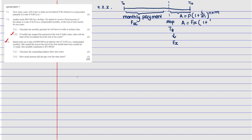So the combined formula is: A equals FV compounded. We know the FV formula is: FV = x × [(1 + i/m)^(n×m) − 1] / (i/m). We substitute this FV into the compound interest formula, replacing P with the full FV expression.